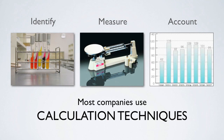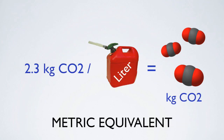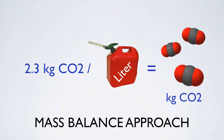Calculation techniques may still involve scientific measurements, but not necessarily direct measurements of greenhouse gas emission rates. For example, we can use the carbon content of gasoline to calculate greenhouse gas emissions from its combustion. We know gasoline is 85.5% carbon, and combustion leads to 19.37 pounds of CO2 per gallon, or about 2.3 kilograms of CO2 per liter. This approach, often referred to as the mass balance approach, is used by many facilities under national and international reporting programs, both voluntary and mandatory.